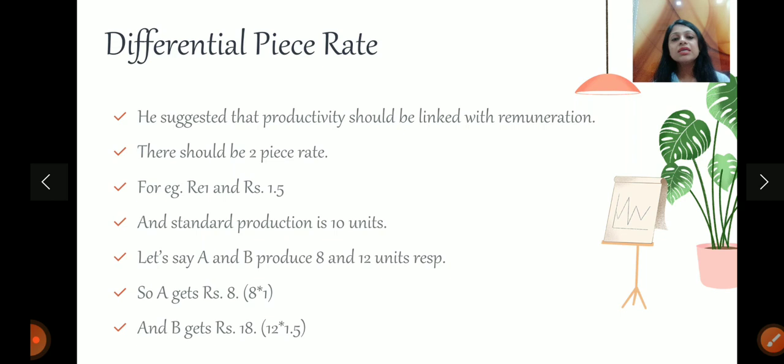So Taylor said that, piece rate should be different. For example, your standard is that, a worker should produce ten units in one day. Person A has produced eight units, person B has produced twelve units.